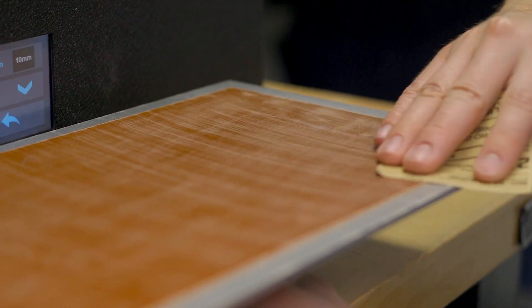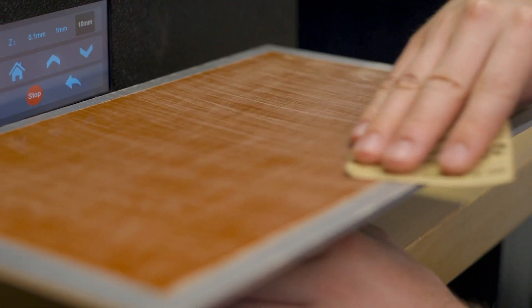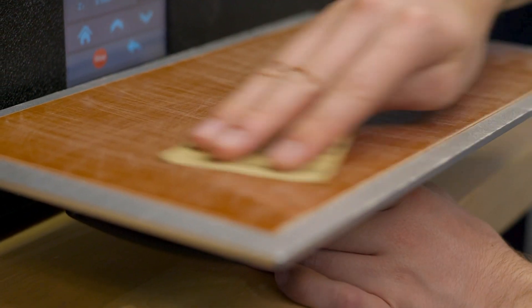Regular sanding is a common solution to improve adhesion and is super effective. Because it's so easy to replace a LayerLock SLA build surface, be confident that you can experiment with your setup and achieve the adhesion properties you are looking for.